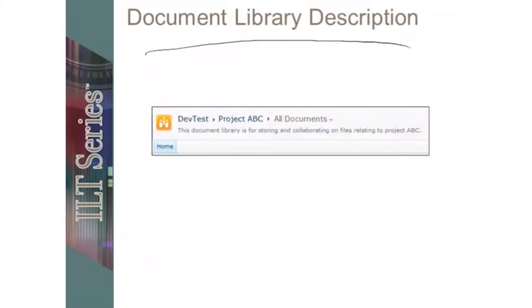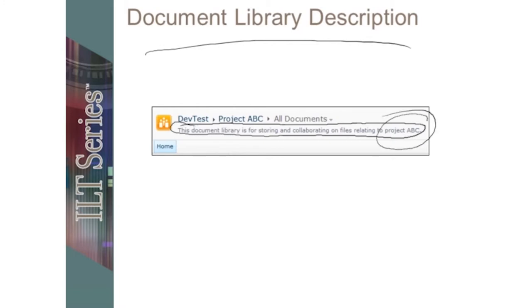Document library description. To describe the library, when you add a description it will show up below the breadcrumb navigation. It's helpful to fill this out and make it something appropriate, so that end users know it's the replacement area or everything related to Project ABC, whatever the information is. Just be aware that if you use the description the users will see it, so make sure it's appropriate, or leave it blank.